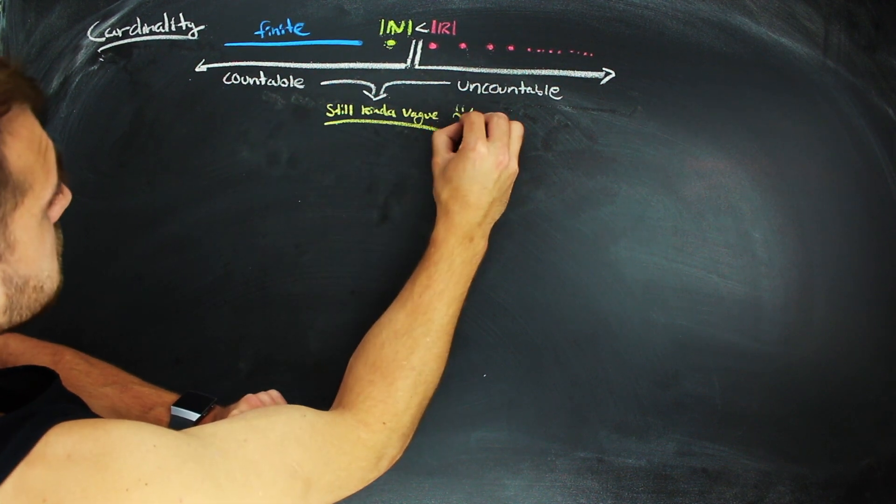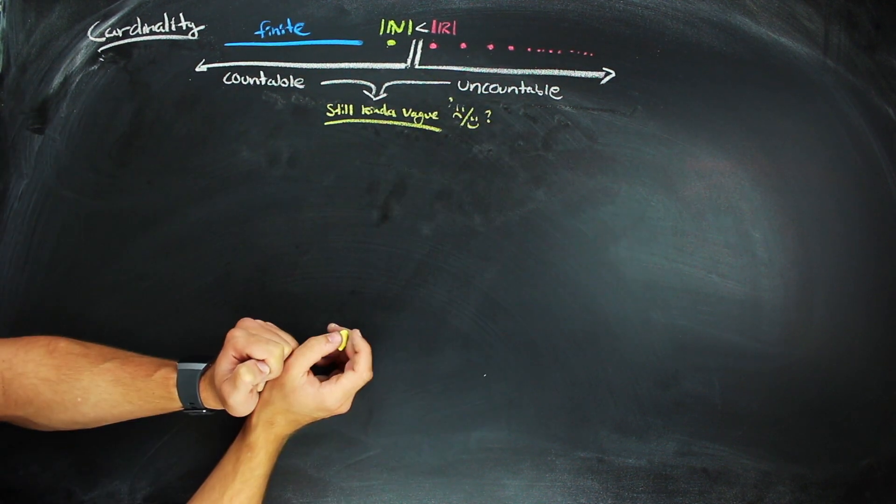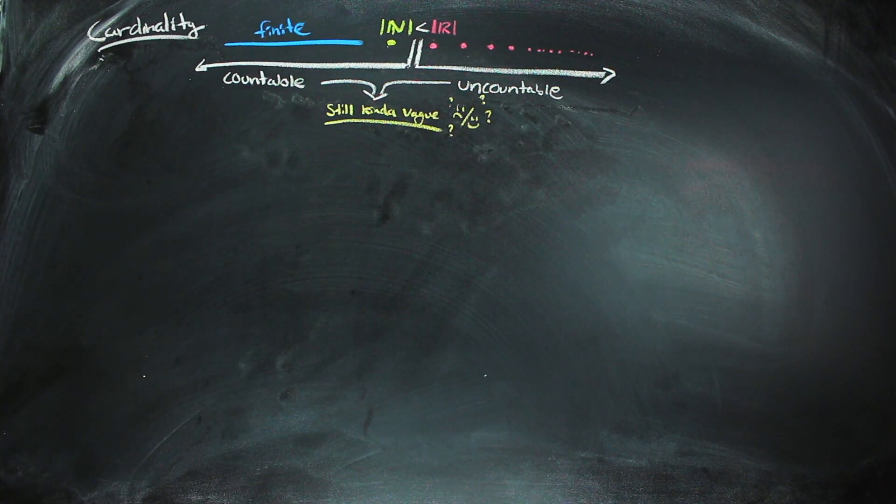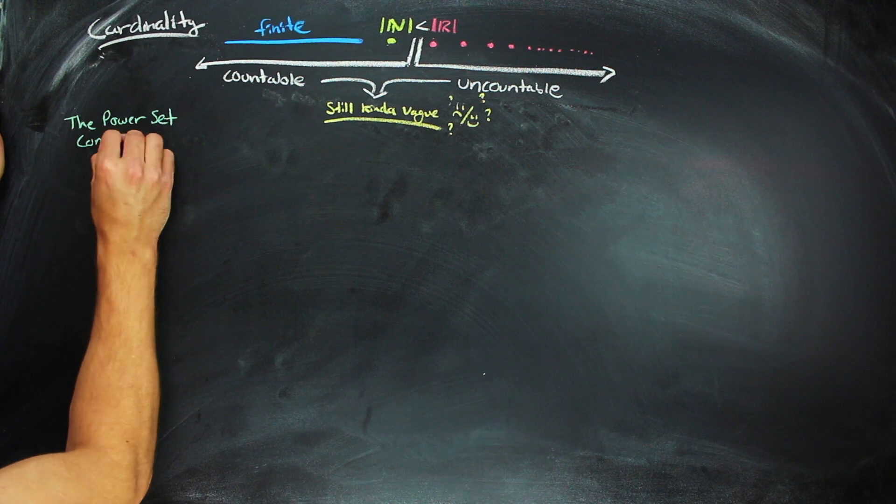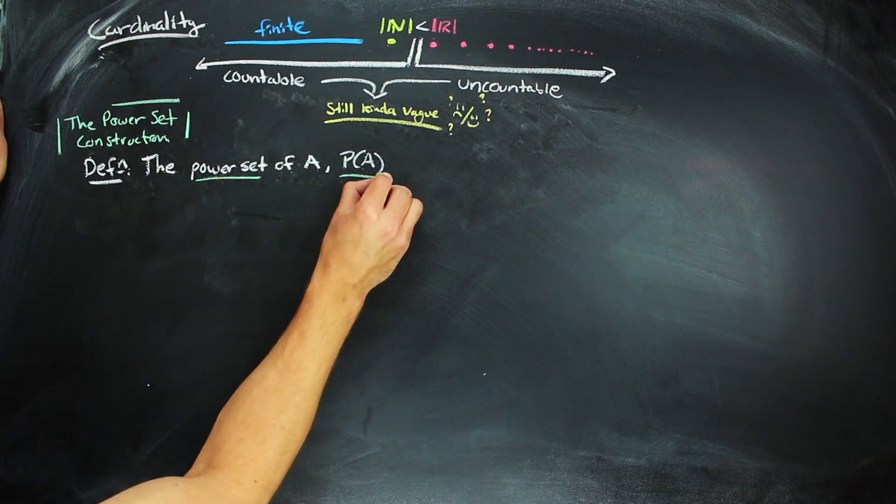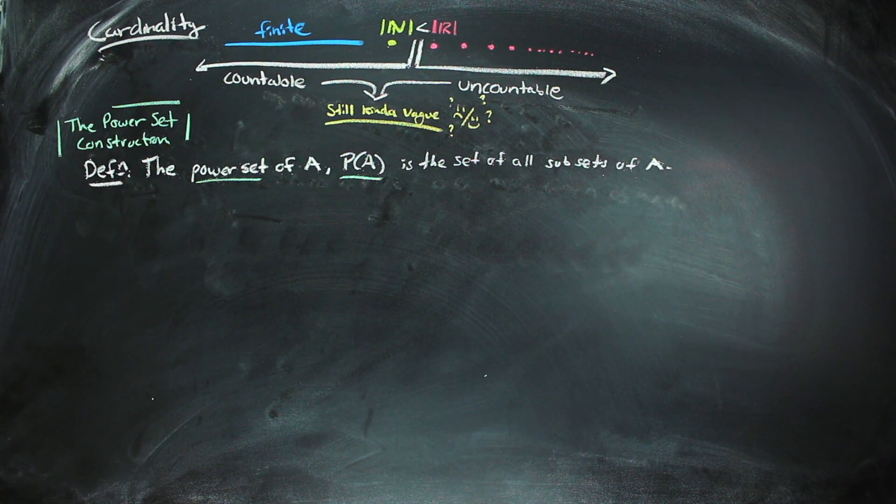This is great. But again, this terminology is a bit vague, a little bit less vague than just infinity. But to show why, we're going to go ahead and talk about the power set construction, which is the power set of a set is the set of all subsets of that set.